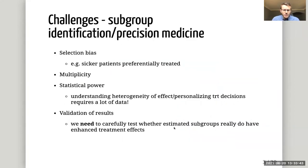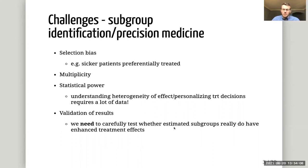There are a lot of challenges in doing so. Often data are observational, so there's selection bias. If there are a lot of covariates which might modify the impact of a treatment, you might run into issues of multiplicity. Furthermore, understanding heterogeneity of treatment effect involves estimating interactions of variables with a treatment, so it's really important to make best use of the data.